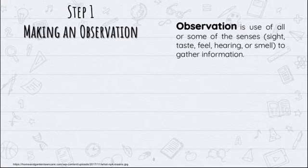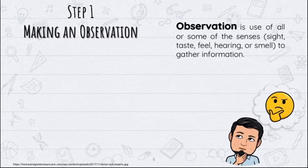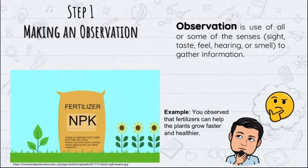We need to observe in order to have a problem to solve. Because if we do not observe, there will be no situation that we need to settle. Based on our situation, we observed that in order to become an efficient plantito or plantita, we need to apply fertilizer. We observed that fertilizers can help plants grow faster and healthier. So that is your observation.